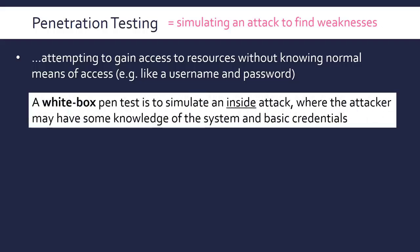There are two types of pen tests. A white box pen test simulates an inside attack where the attacker may have some knowledge of the system and may have basic credentials. You might have a basic username and password, and then there's an administrator account or a database which you're not meant to access. Normal employees won't be able to access it, but you have some knowledge of how it works, so you're pretending you're an employee of the company. Penetration testing is usually done by an external company that does it for you.